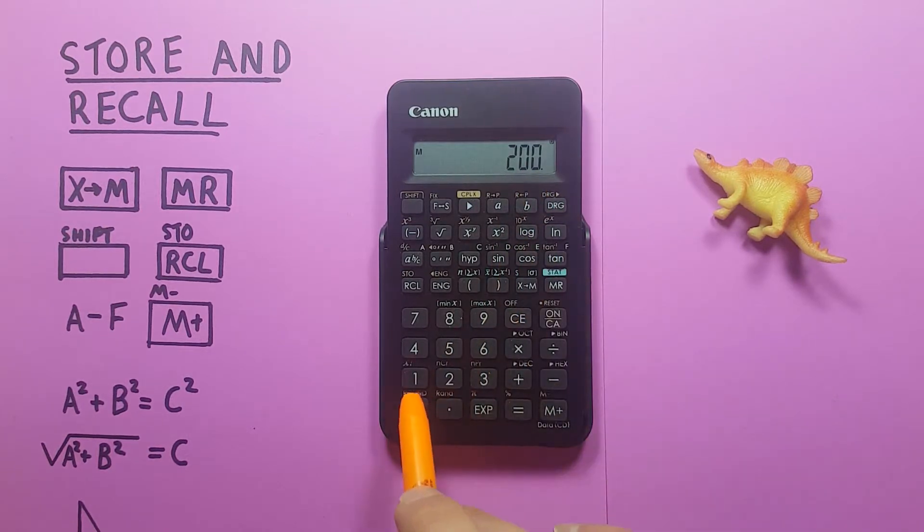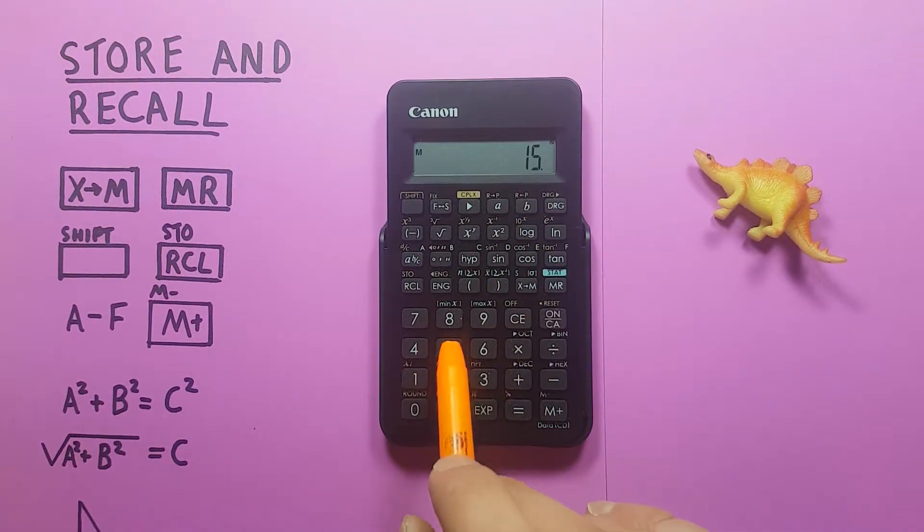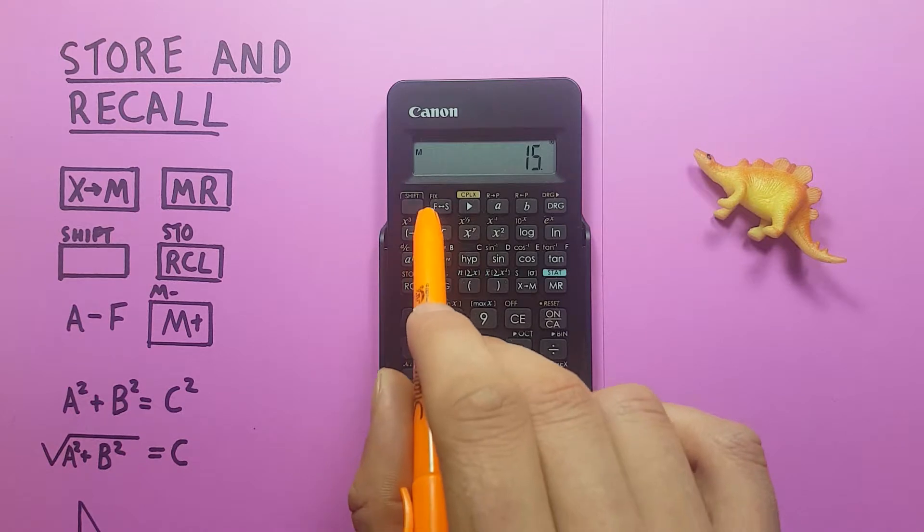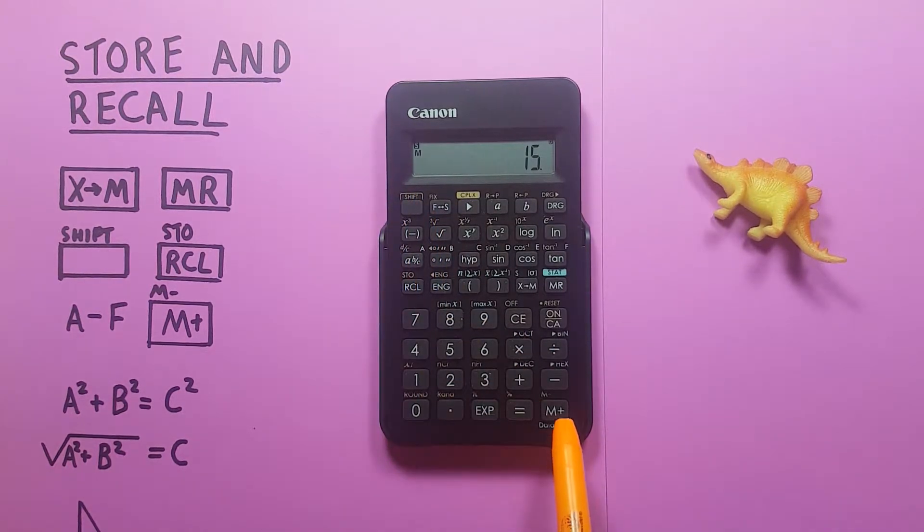If we want to say subtract 15 from it, place 15 on the screen, press shift, M minus.